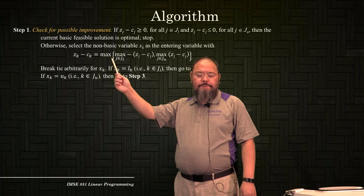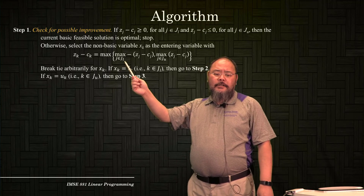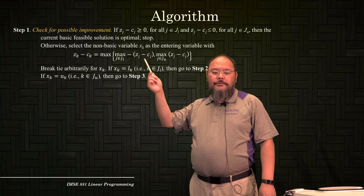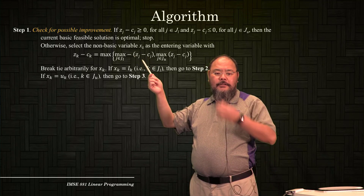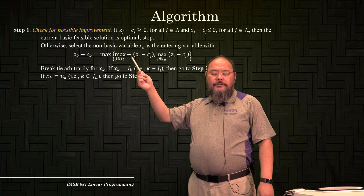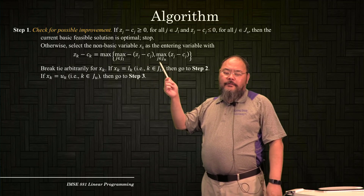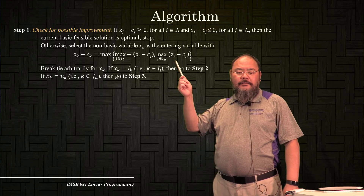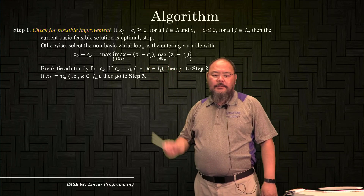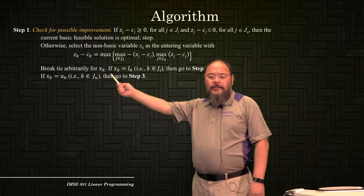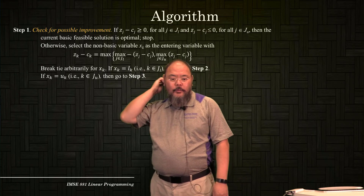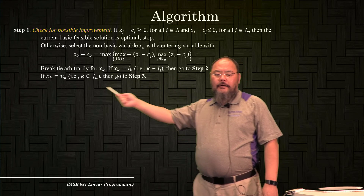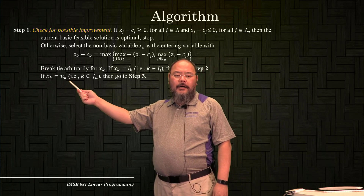Otherwise, we're going to choose one of the non-basic variables xk as the entering variable. We determine xk based on zk minus ck. For non-basic variables at the lower bound, we look at negative zj minus cj — which makes it positive. For those at the upper bound, we directly use zj minus cj in the positive range. We compare who has the maximum value and can break ties arbitrarily. If the chosen variable is at the lower bound, go to step two; if at the upper bound, go to step three.